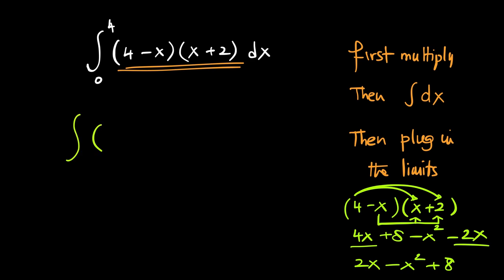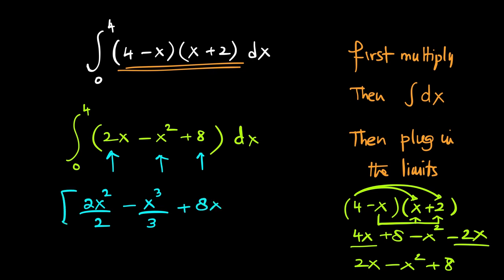So let's rewrite the term inside the brackets. The limits are still the same. The expression is 2x minus x square plus 8. Let's integrate each term individually. So 2x becomes 2x square over 2 minus sign as it is x square becomes x cube over 3. 8 becomes 8x and the limits are 0 and 4.